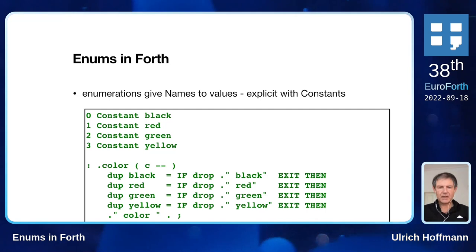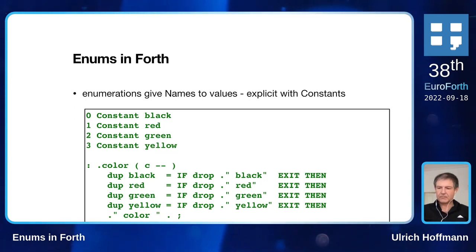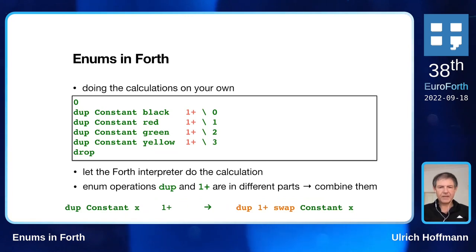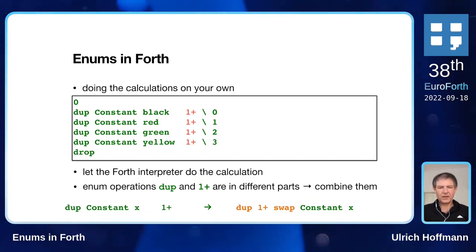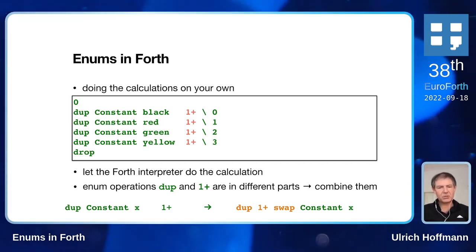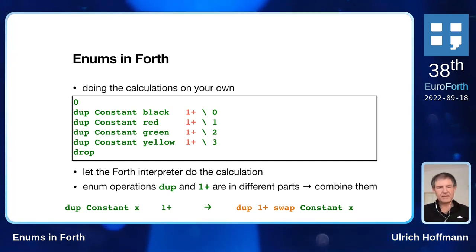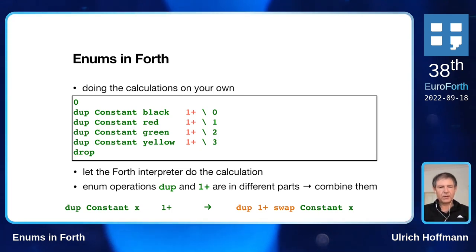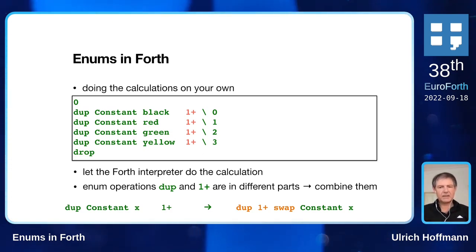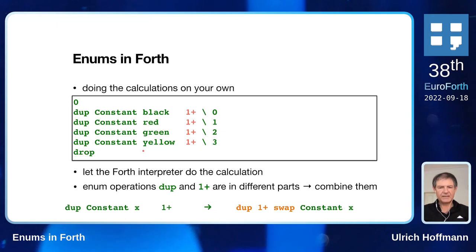So if you want to print out a color, you check for black, red, green, yellow, and display the appropriate string color name. If you want to insert an enum value in the middle, then you have to renumber the rest, so that might not be a good idea. What you can do is use the Forth interpreter to actually do the calculations for you. You use a phrase: you start with a zero, then you create the appropriate constant, increment the enumeration value, and so on, to define the same constants as before, letting the Forth interpreter do the calculation.